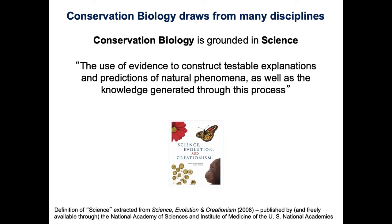Science is the use of evidence to construct testable explanations and predictions of natural phenomena, as well as knowledge generated through this process. This tells us that you can't just say anything is conservation biology. It needs to rely on data that we've used to look at different natural phenomena, test different ideas, and then we discard ideas that are not supported by the data.